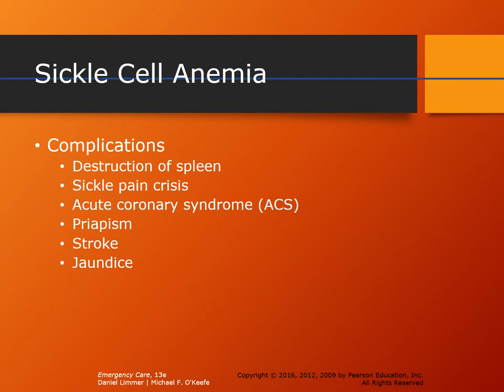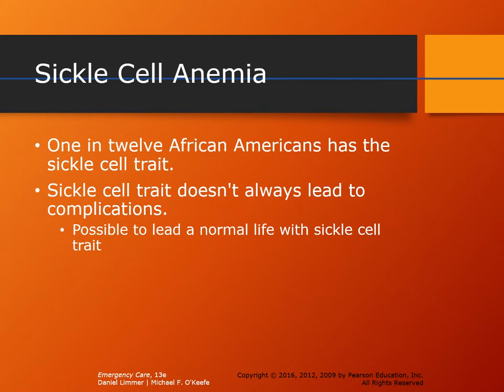Sickle cell anemia has many complications. Some of the more common ones include destruction of the spleen, sickle pain crisis, acute coronary syndrome (ACS), priapism, stroke, and jaundice. Notably, 1 in 12 African Americans has the trait for sickle cell, and once these cells are presenting in the bloodstream, the patient has sickle cell anemia.